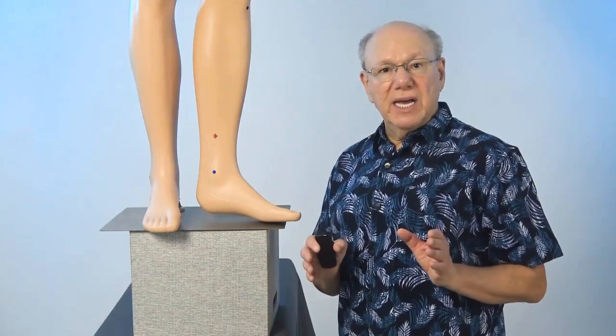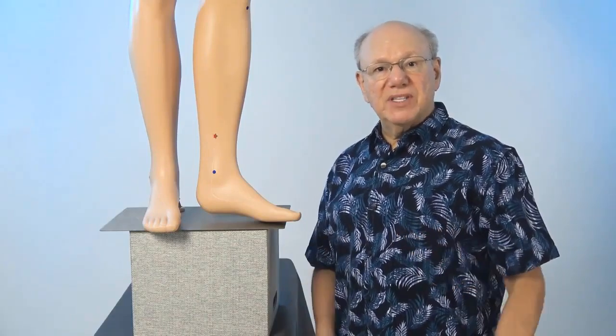Spleen 6 is located on the inside of your leg, the width of four fingers above the tip of your ankle bone.